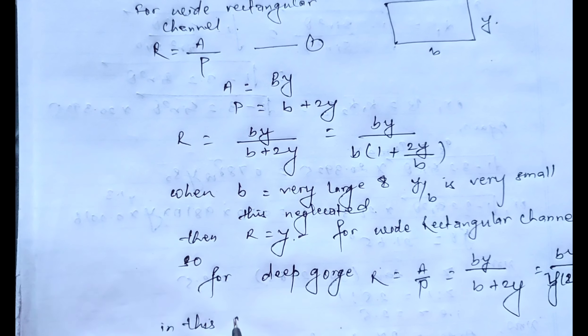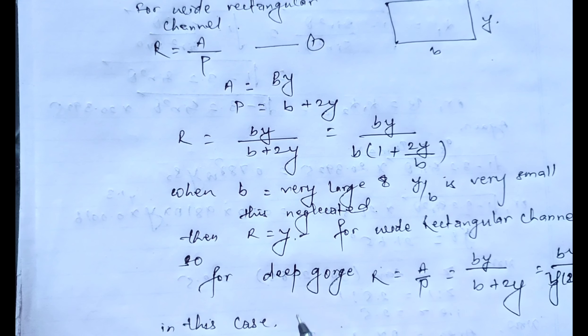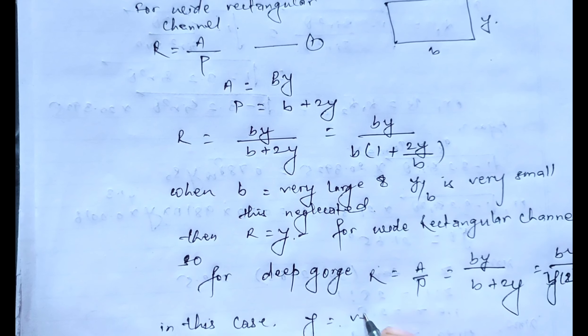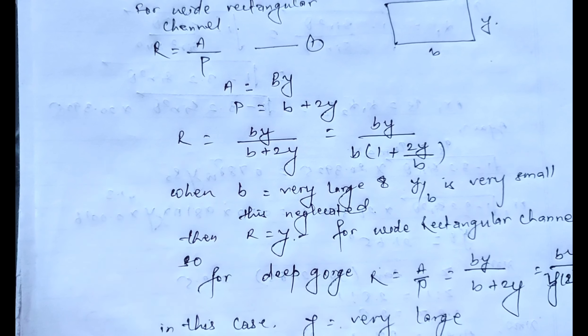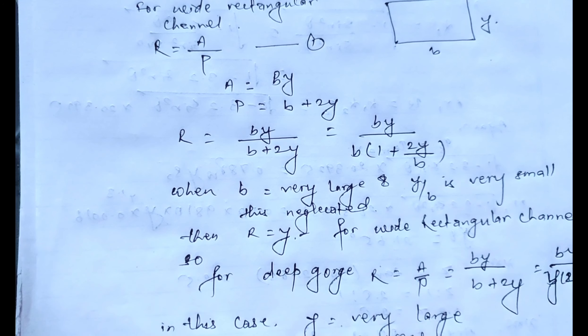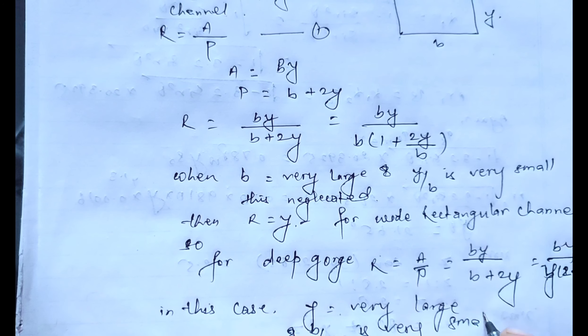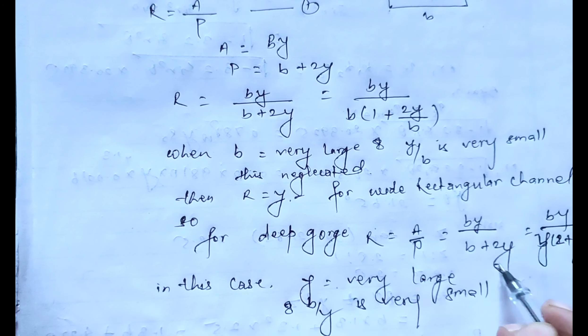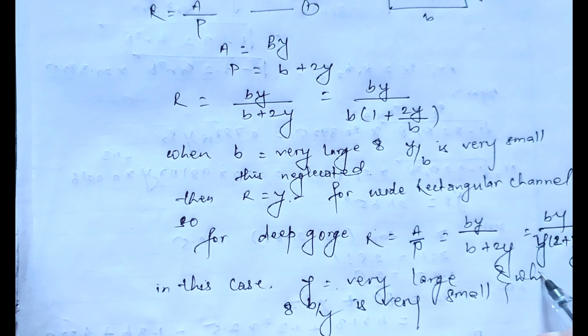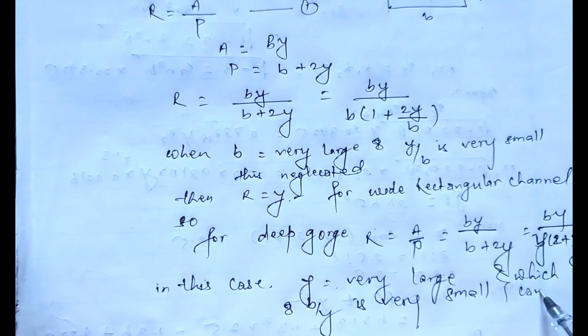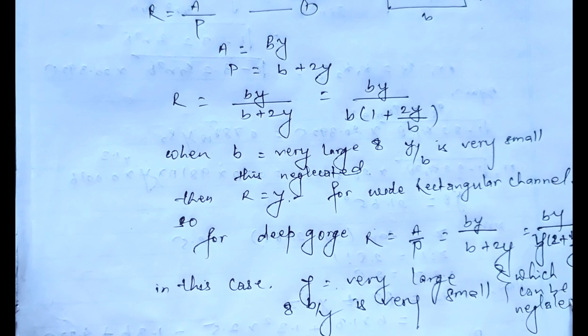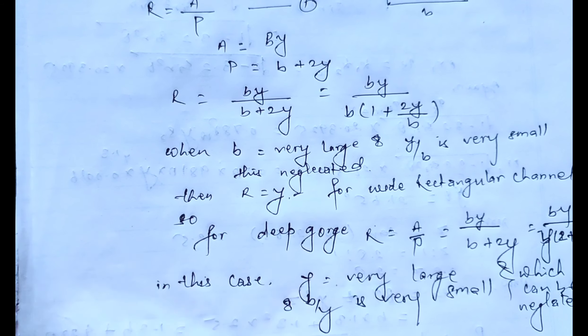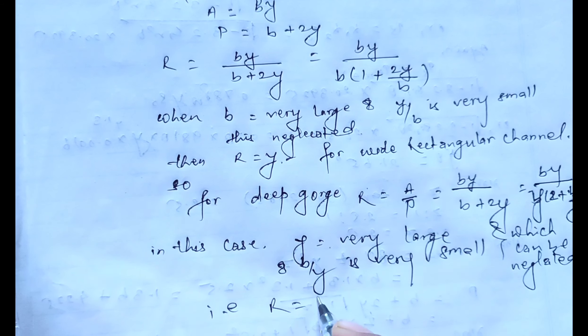In this case, Y is very large and B by Y is very small, which can be neglected. That is, the remaining is R equals B by 2.